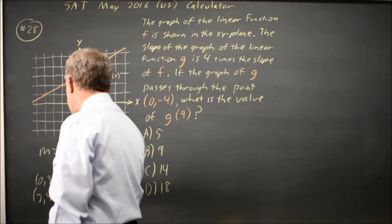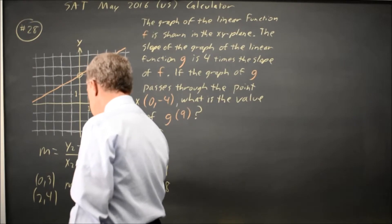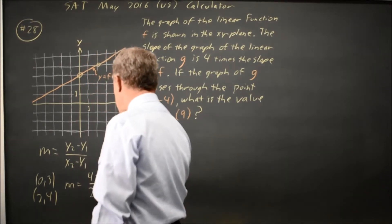So the slope is the change in y, 4 minus 3, over the change in x, 2 minus 0, which is 1 over 2.